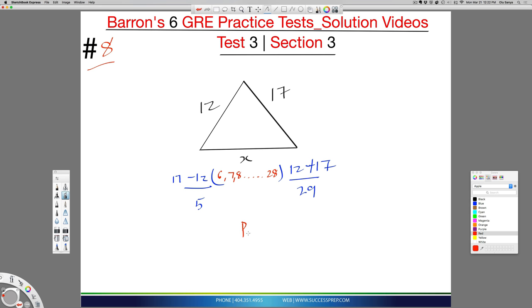Your perimeter will range on the low side from 12 plus 17 plus 6, and go as far as 12 plus 17 plus 28. If you do that, you get a range from 35 all the way to 57.